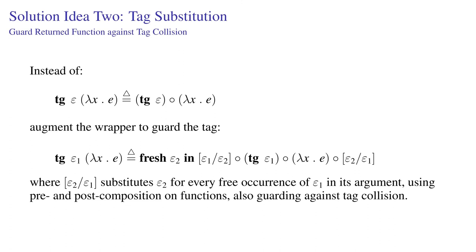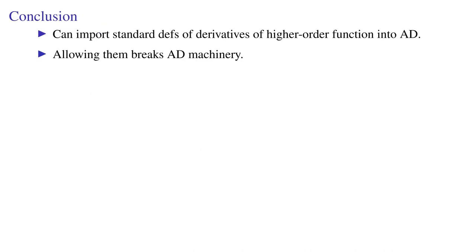So, we could augment it with a wrapper to guard the tag in the function so that if it occurs externally, the external one gets renamed away and then renamed back after being passed through.